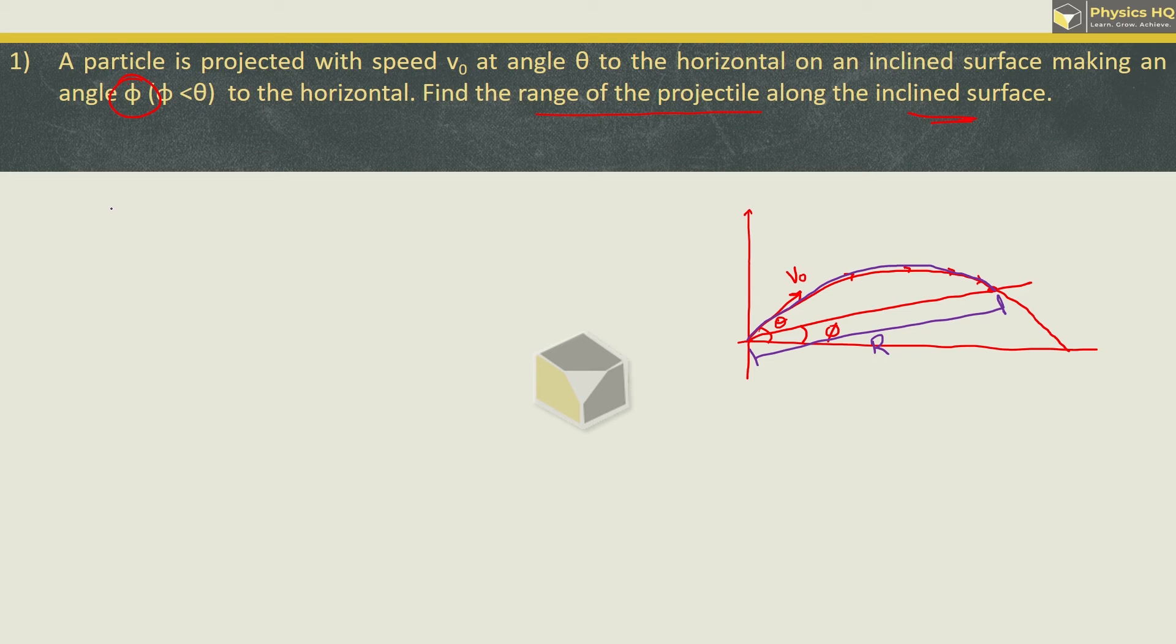If we follow particle projectile motion then this equation is y equals tan theta into x minus g by 2u square cos square theta into x square. Where u is initial velocity, here the initial velocity is v0. And theta is the angle of projection with respect to the horizontal. So this is the first thing.